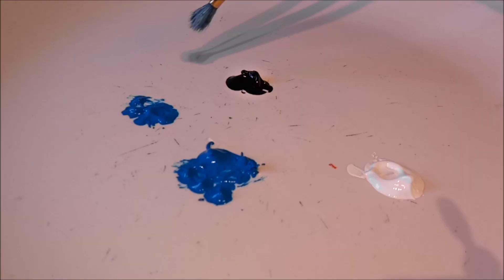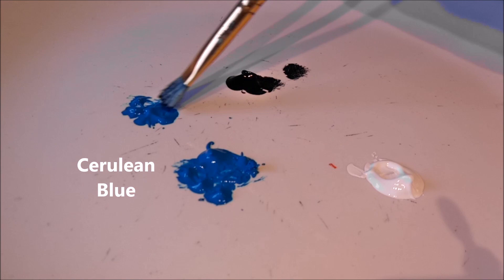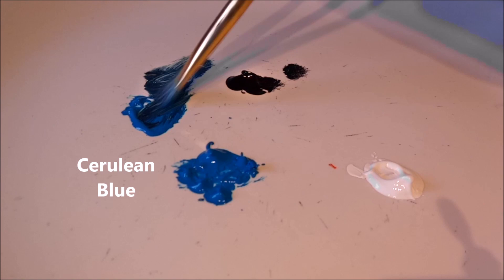So I've got my flat bristle brush and I'm mixing up a dark blue color, that's cerulean blue and black. And if you'll notice I've also put out an extra amount of cerulean blue and some white, which I'll be using in just a minute.